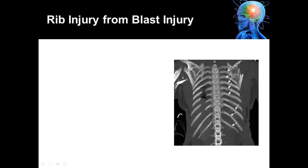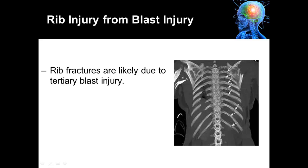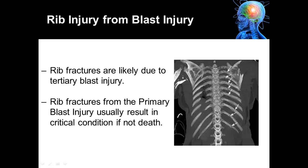Rib fractures can also occur from blast injury. However, rib fractures are more likely due to tertiary blast injury — that is, injury from being thrown against an object. Rib fractures from the primary blast injury usually result in a very critical condition, if not death. This picture depicts fractured ribs.